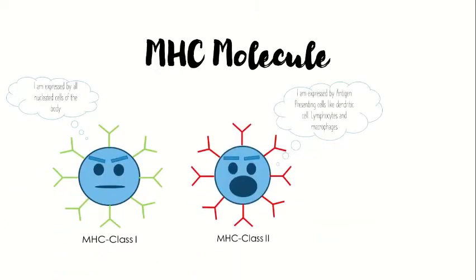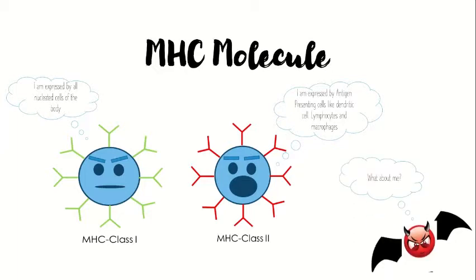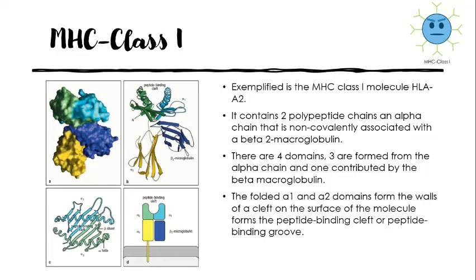There are two classes of MHC molecules — MHC class 1 and MHC class 2 — differing in both structure and expression patterns. MHC class 1 is expressed on all nucleated cells of the body, while MHC class 2 is expressed by specialized antigen-presenting cells: dendritic cells, B lymphocytes, and macrophages. Non-nucleated cells such as mammalian red blood cells express little or no MHC class 1, making the interior of red blood cells a site where infection can go undetected by cytotoxic T cells. This may be what allows parasites like Plasmodium, which cause malaria, to live within such privileged sites.